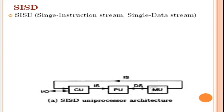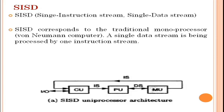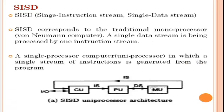SISD is the Single Instruction Stream and Single Data Stream. It corresponds to traditional mono-processors — only one computer — where a single data stream is processed by one instruction stream. As shown in the figure, it is a single uniprocessor computer in which a single stream of instructions is generated from the program.